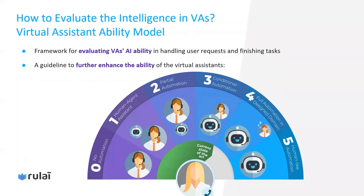You may ask: how to evaluate the intelligence, the smartness, in a virtual assistant? To help people evaluate a virtual assistant's AI ability, let me introduce the Virtual Assistant Ability Model. This model is very similar to autonomous driving cars' five levels — not surprisingly, because an autonomous driving car is a special kind of virtual assistant. In level one, we have virtual assistants that provide help to human agents in the contact center. It's called human agent assist.